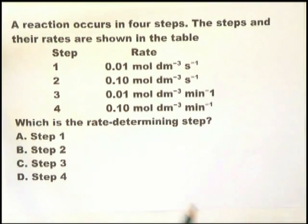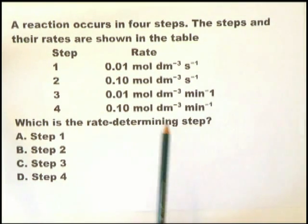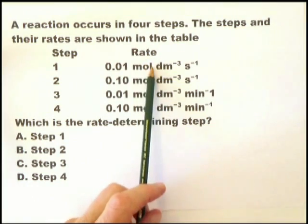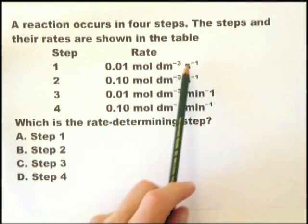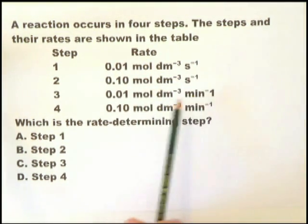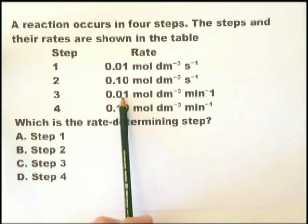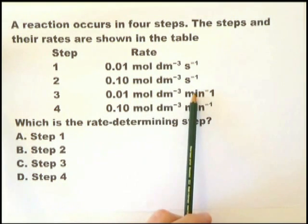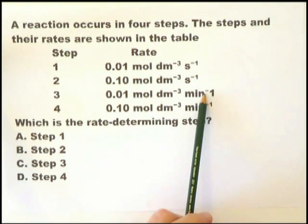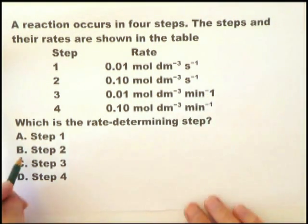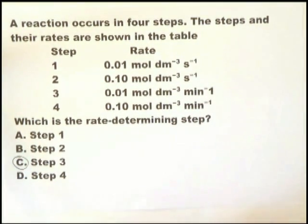In this, the examiner is asking, which is the rate-determining step? And you know that the rate-determining step is the slowest. Therefore, we're looking for the smallest number of moles and the longest time scale. And that gives us step 3. The smallest number of moles is 0.01. The longest time scale is per minute. So step 3 is the answer. That is the slowest step.